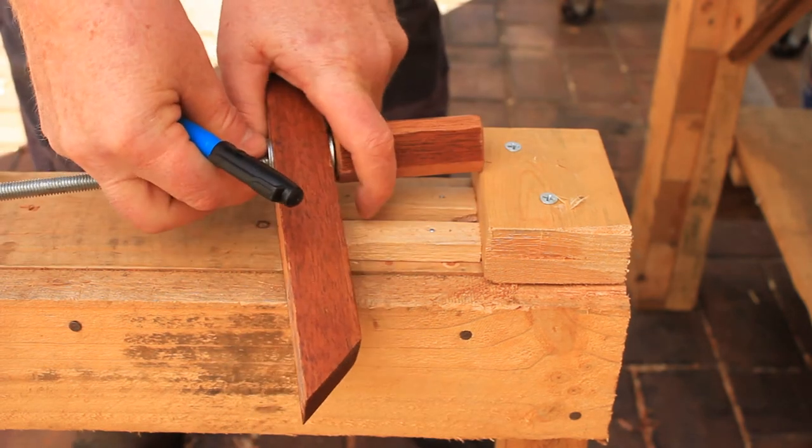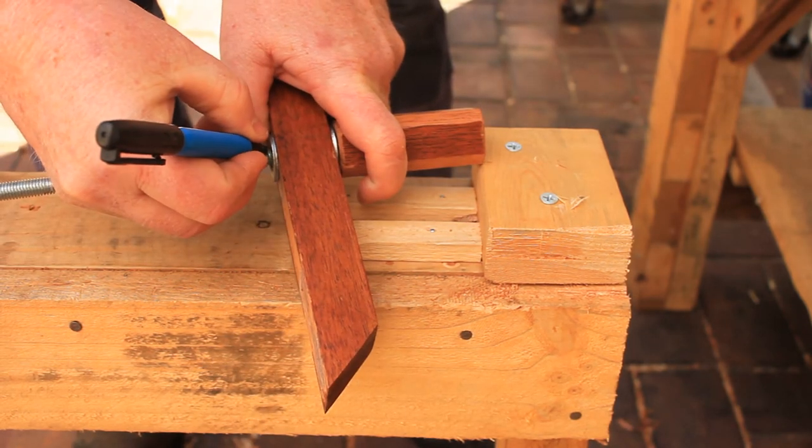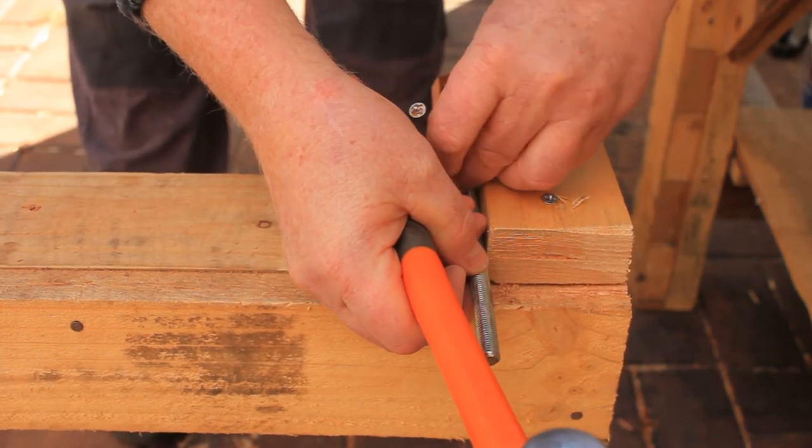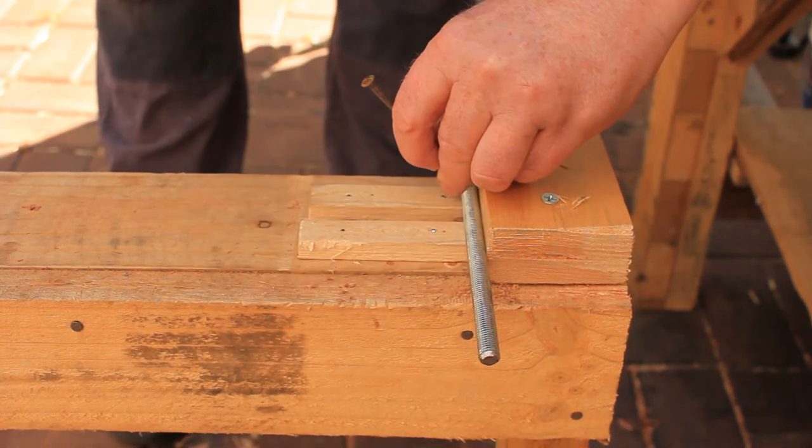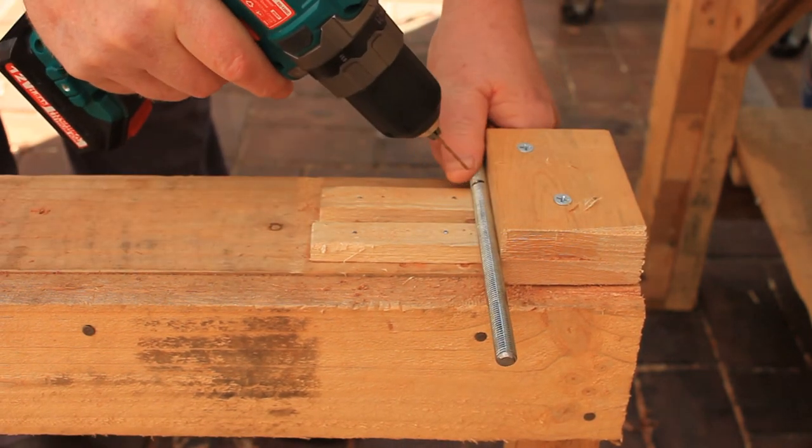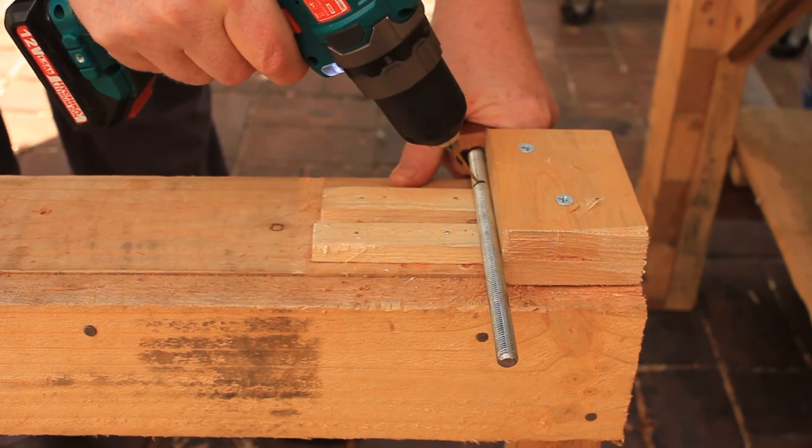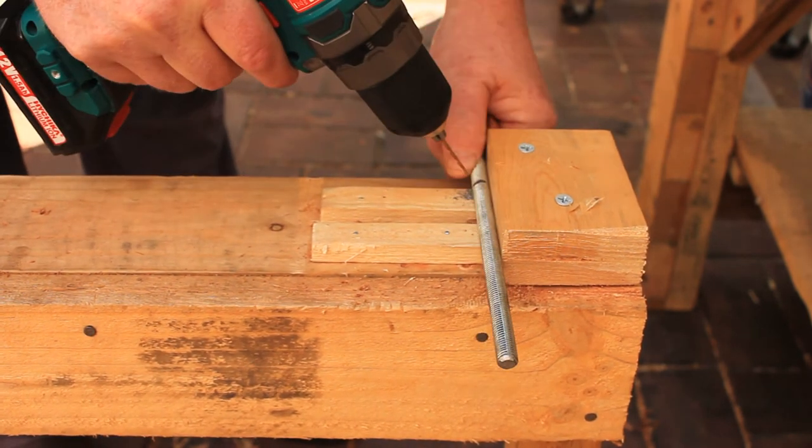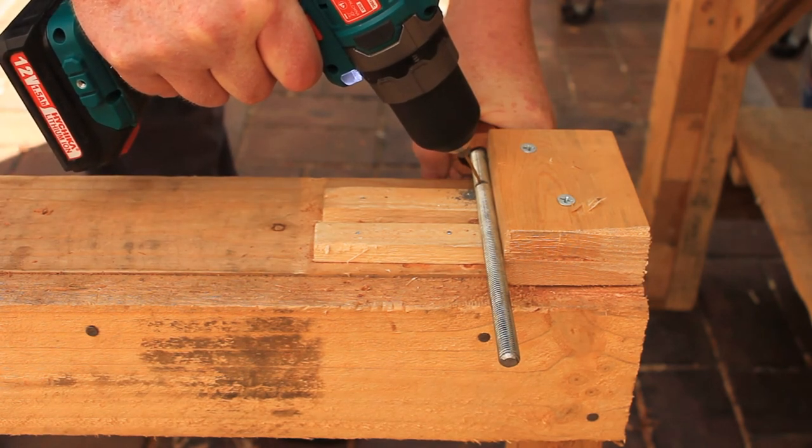A third option is to drill a hole through the rod and use a cotter pin. Use your big nail as a center punch again. Then use a 2mm drill bit to make the hole through the rod. These small drill bits snap very easily especially when they break through the far side of the rod.